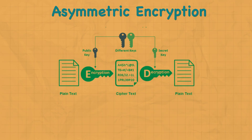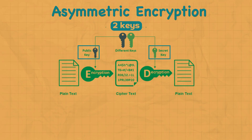Asymmetric encryption is a relatively new method. Compared to symmetric encryption, it uses two keys: a public key and a private key. A public key is made freely available to anyone who might want to send you a message, while the private key is kept secret. It is designed so that a message encrypted using a public key can only be decrypted using the private key, and a message encrypted using a private key can be decrypted using the public key.